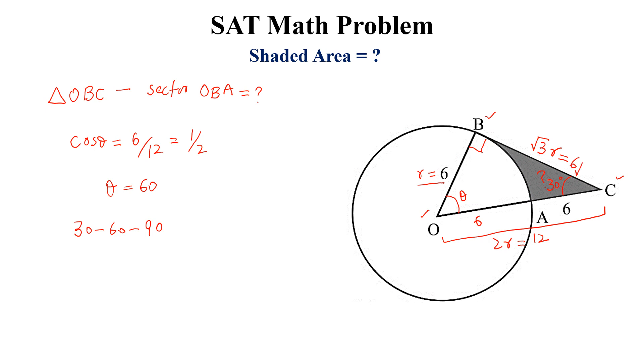Now we can calculate area of triangle OBC, and this is equal to 1/2 of 6 times 6√3.